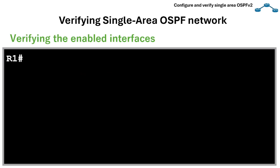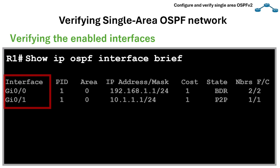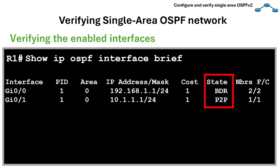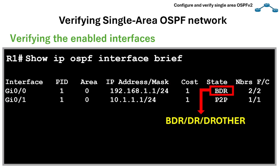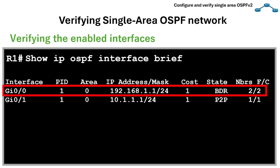Next is verifying enabled interfaces. We can use the command show ip ospf interface brief, which is useful for quickly checking which interfaces are running OSPF, their area, and state. In this example output, we can see the different interfaces running OSPF. The state means network type and role — it can be BDR, DR, DR Other, or P2P for point-to-point links. We can see that on interface GigabitEthernet0/0, router 1 is the BDR with two neighbors fully adjacent.